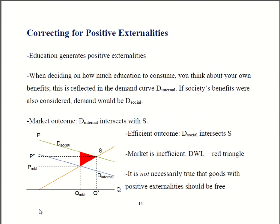Now, if you were to fully account for those extra benefits to society, then your demand curve would be out here — D social. In a market outcome, you care only about your own benefits and your own costs. That demand curve intersects supply over here. You consume this quantity, Q market.